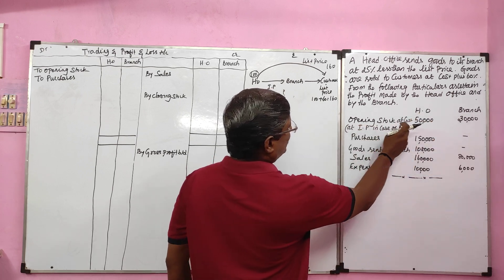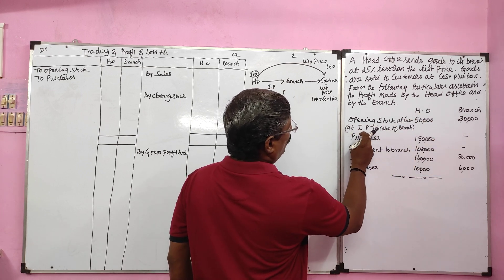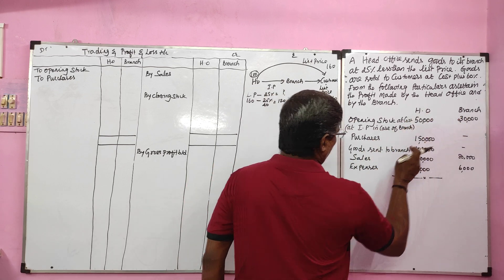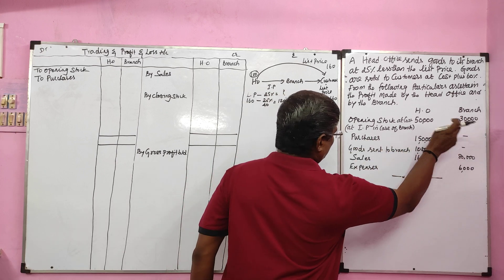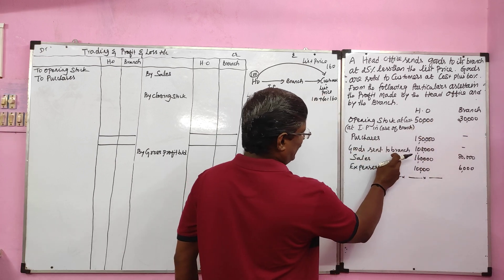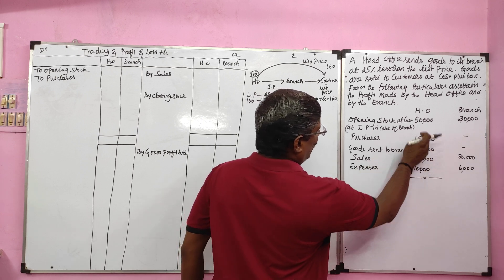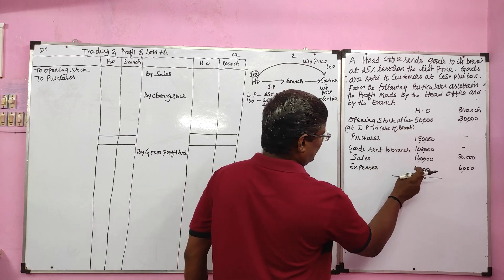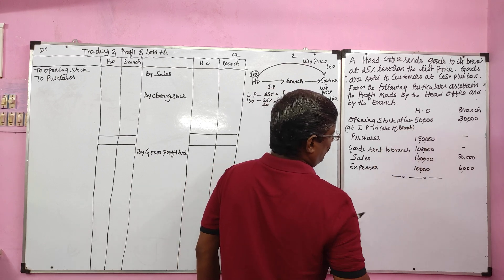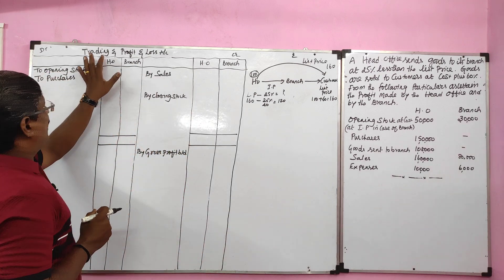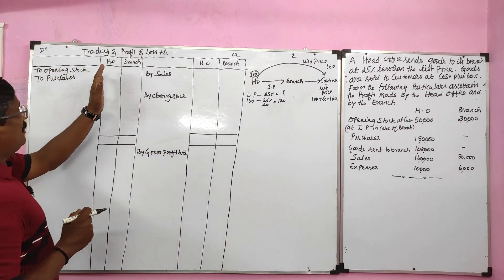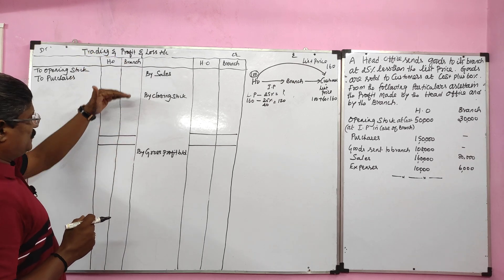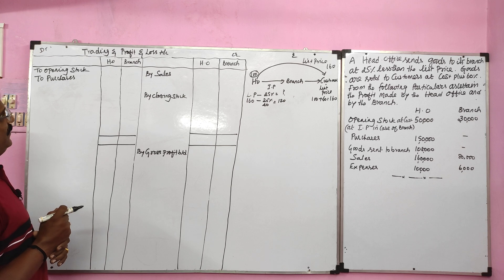Opening stock at cost for head office is 50,000; branch opening stock at invoice price is 30,000. Purchases made by the head office — no purchases made by the branch. Goods sent to branch: 1 lakh 8,000. Head office sales: 1 lakh 60,000; branch sales: 80,000. Expenses of head office: 10,000; expenses of branch: 6,000. We have to prepare a trading profit and loss account with two columns — head office and branch.